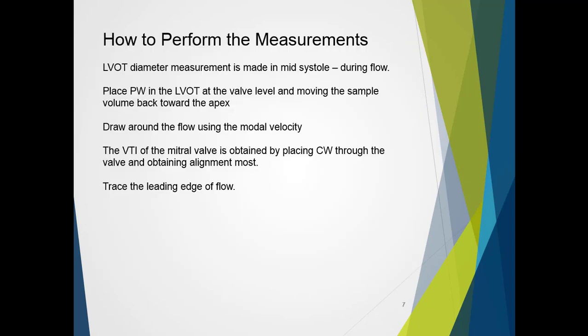So how do we actually go about performing the measurements? We know the diameter halved is the radius of the left ventricular outflow tract. To minimize the effect of the assumption that LVOT size is uniform, it is important that we measure in the right period of the cardiac cycle, which is mid-systole, during flow. The velocity-time integral is obtained by placing a pulse wave in the left ventricular outflow tract at the level of the valve, and then moving the sample volume back towards the apex to minimize flow acceleration and valve clicks, which are basically leaflet motion.